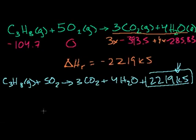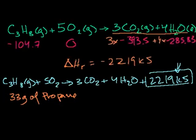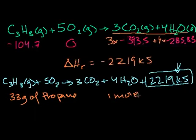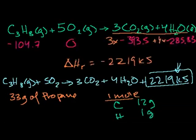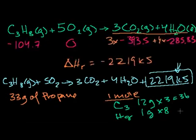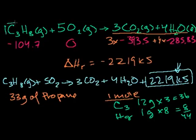Sometimes a question will ask: how much heat is released if you're given 33 grams of propane? Well, you figure out how many moles that is. One mole of carbon weighs 12 grams and one mole of hydrogen weighs 1 gram, so one mole of propane C3H8 is 3 times 12 plus 8 times 1 equals 36 plus 8 equals 44 grams per mole.